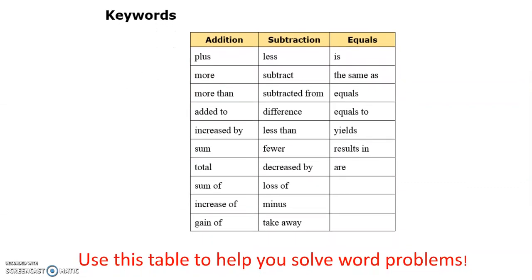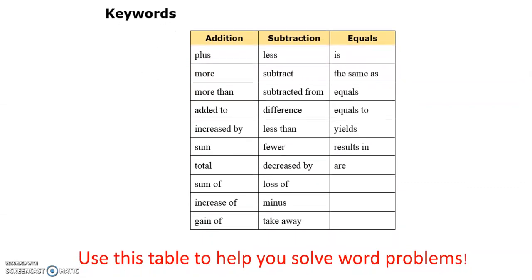In the module, it talks about some key words that we need to know for addition and subtraction. Sometimes we have words that can be in both categories. For example, under the addition column, we have the words more and more than. These two words can really be in either category.